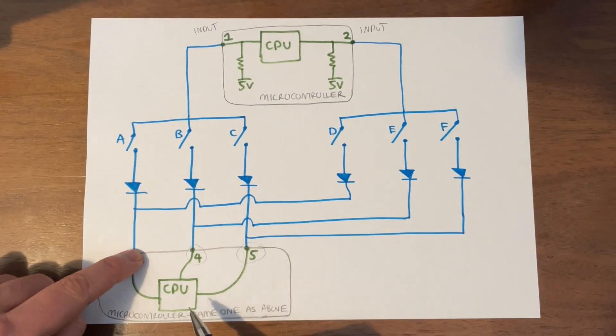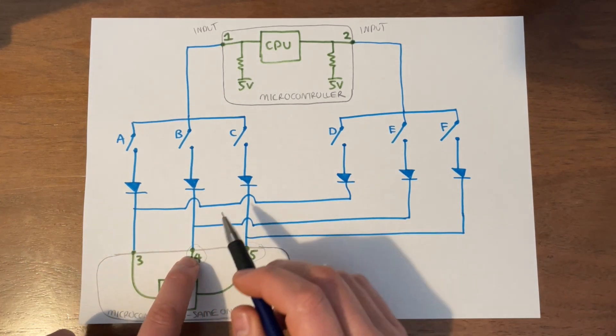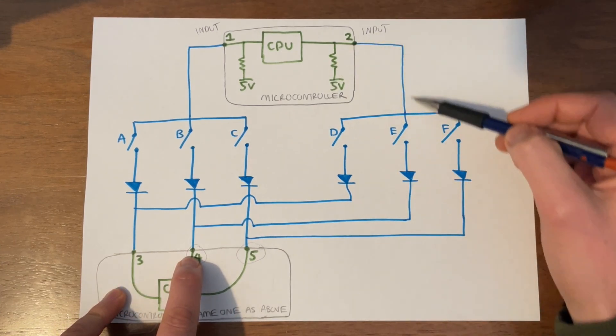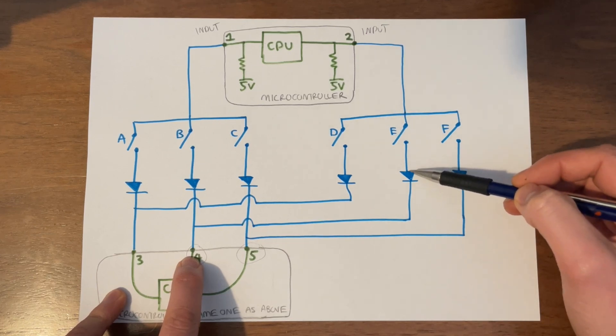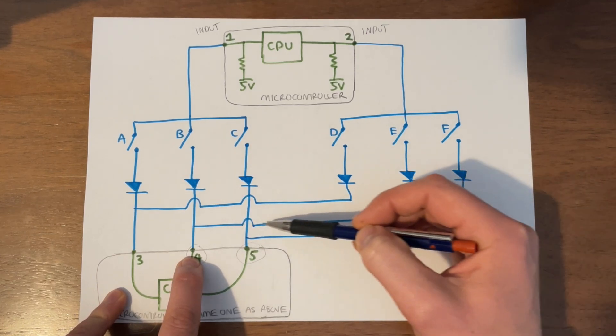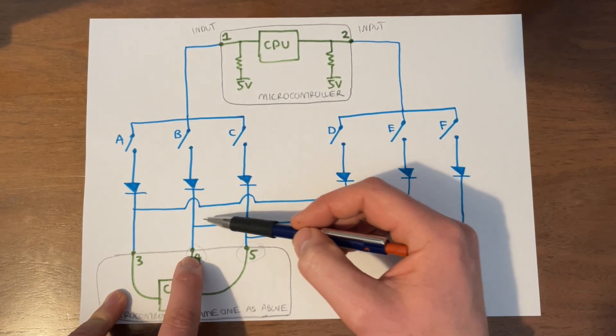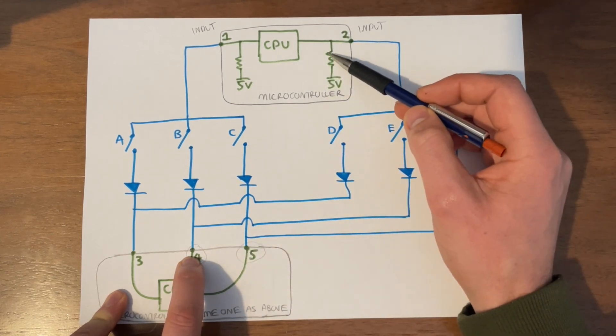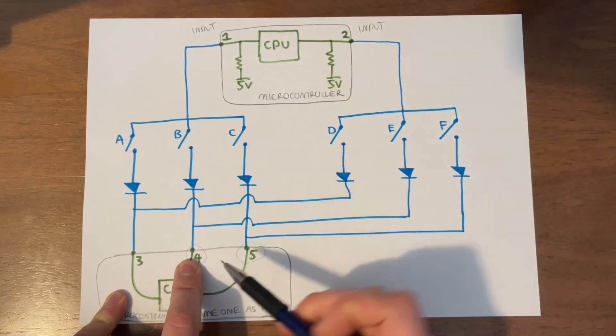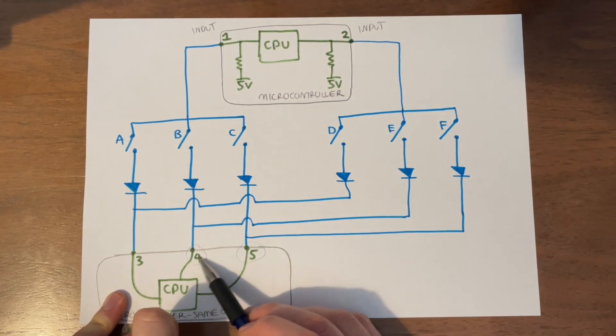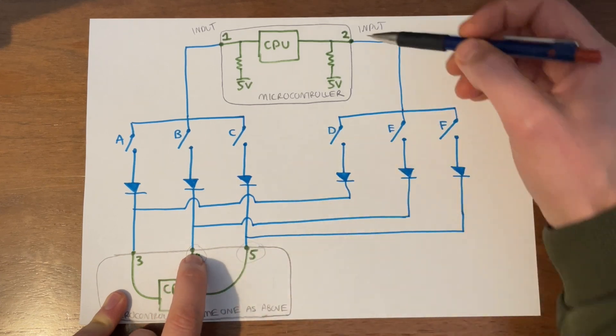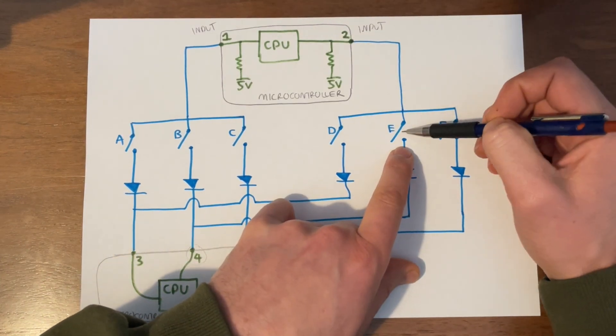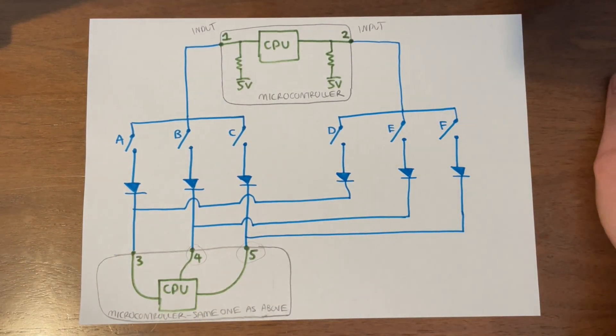Okay, so then what if we set 3 back to float, and we make 4 ground? Well then, if we press key E, then current is going to flow down through here. It can go this way, through the diode. It will flow down here. The current can't go up this way. It will flow down to ground in pin 4, and so therefore you'll see a change from 5 volts down to 0 volts. And again, you know that pin 4 is set to ground, and pin 2 has seen a change. Therefore, you know that key E has been pressed. So this is exactly how my organ works.